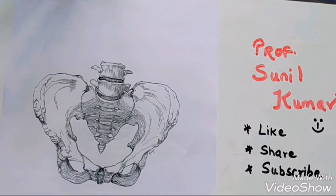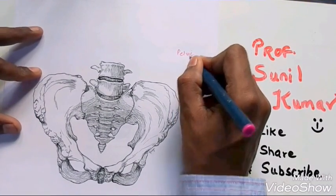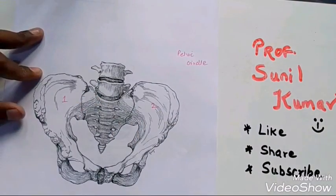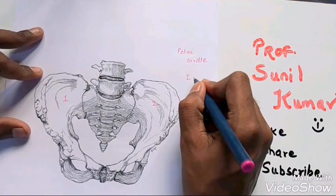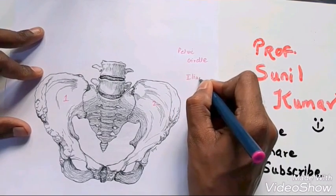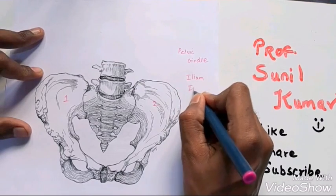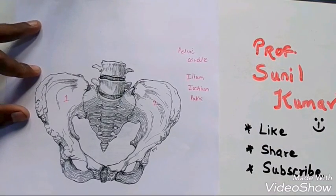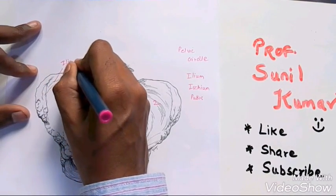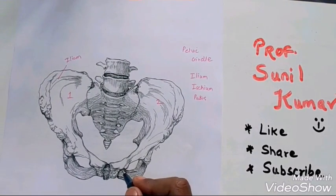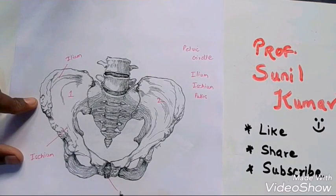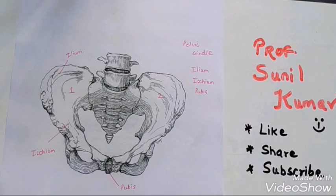This girdle is pelvic girdle. Pelvic girdle is definitely two bones, one here, two here. But these two bones are formed by the fusion of three bones: ileum, ischium, and pubis. So ileum, ischium, and pubis are the three bones. Here we have ileum, then we have ischium, and this part is called pubis. So like this you can remember the girdles and all the 206 bones.